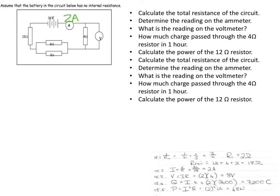Then determine the reading, calculate the total resistance, no, calculate the power in the 12 ohm resistor. So in the 12 ohm resistor, I've got resistance and I've got current. So I'm going to go power is I squared R, substitute in the values and I get 48 watts.